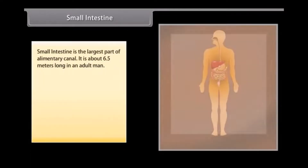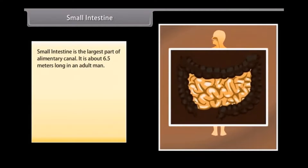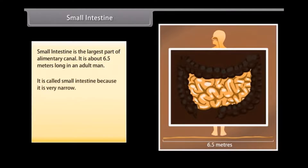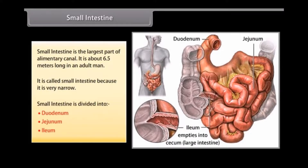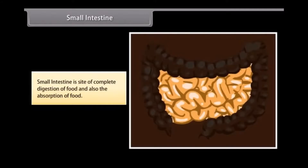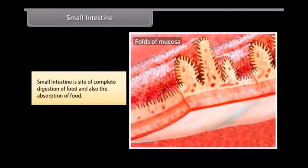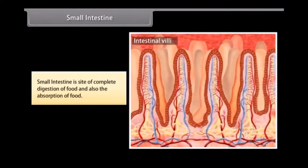Small intestine is the largest part of the alimentary canal, about 6.5 meters long in an adult man. It is called 'small' intestine because it is very narrow. Small intestine is divided into duodenum, jejunum, and ileum. It is the site of complete digestion of food and also the absorption of food.